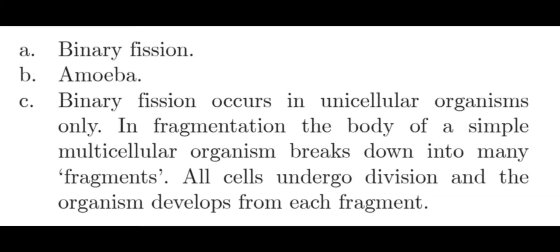First question, identify the process. It is binary fission. The organism which uses the method and the organism which is shown in the question is amoeba. The third question, how this binary fission is different from fragmentation? Binary fission occurs in unicellular organisms only. In fragmentation, the body of a simple multicellular organism breaks down into many fragments. All cells undergo division and the organism develops from each fragment. This is how binary fission and fragmentation are different from each other.